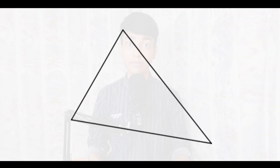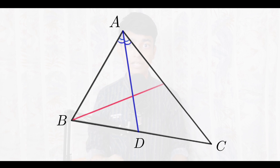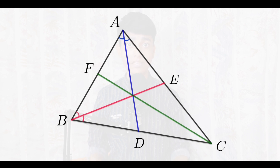Today we have a nice geometrical theorem known as Ceva's theorem. Take a triangle and label its corners as A, B, and C. Now draw segment AD such that it is the angle bisector for angle A. Similarly, draw segments BE and CF, both being the angle bisectors for angles B and C respectively.